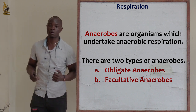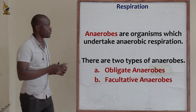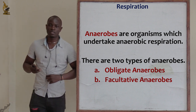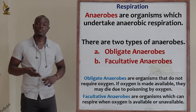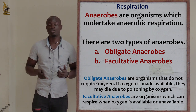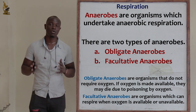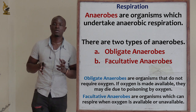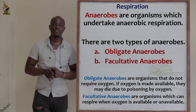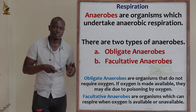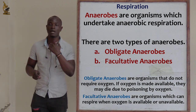Obligate anaerobes are organisms which do not require oxygen at all. If oxygen is made available, these organisms are going to die. Those are the obligate anaerobes — organisms which completely do not require oxygen, and for which oxygen tends to be poisonous.